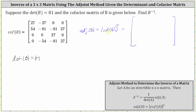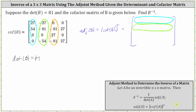To find the transpose of the cofactor matrix, or the adjoint of matrix B: the first column in the cofactor matrix will become the first row in the adjoint of B, the second column will become the second row, the third column will become the third row, and the fourth column will become the fourth row.